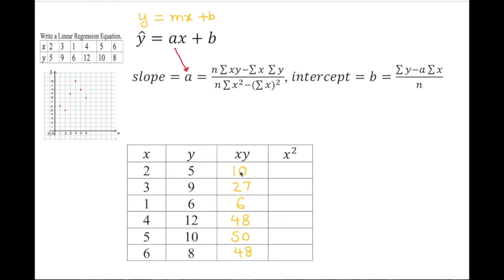Now squaring the x-values: 2-squared is 4, 3-squared gives 9, 1-squared is 1, 4-squared is 16, 5-squared is 25, and 6-squared is 36.